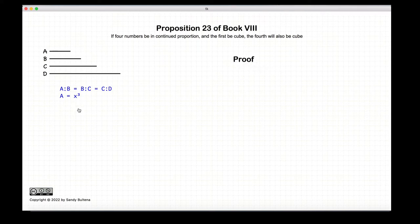So let's prove this. Again, we start off with our four numbers that are in continuous proportion, and we know from Proposition 22 that A and D will be similar, and they will both be solid numbers.